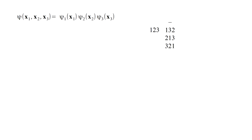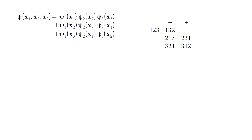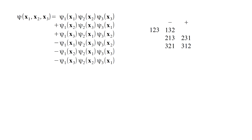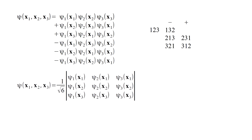Starting from permutation (2, 1, 3), swapping electrons one and three gives permutation (2, 3, 1). Two swaps yield a minus-minus sign, which is a plus sign. From permutation (3, 2, 1), swapping electrons two and one gives (3, 1, 2). We get the Slater determinant by adding the two positive permutations — (2, 3, 1) and (3, 1, 2) — and subtracting the three negative permutations — (1, 3, 2), (2, 1, 3), and (3, 2, 1) — for a total of six terms, three positive and three negative. Formally, this is written as the determinant of a three-by-three matrix, with columns corresponding to different one-electron orbitals and rows to different electron coordinates. The normalizing factor is one over the square root of six.